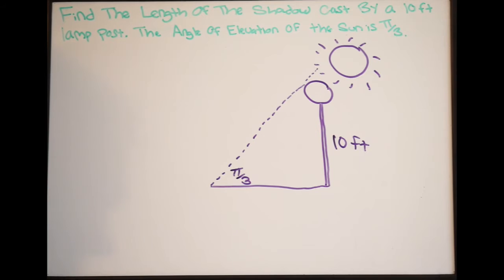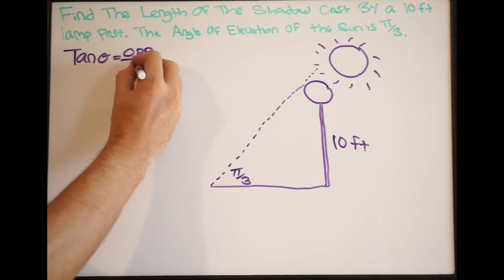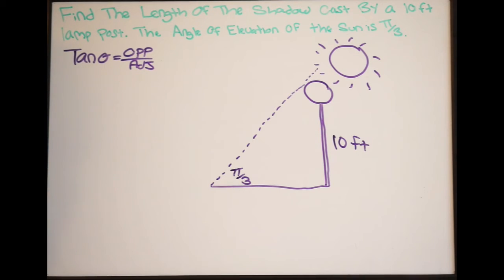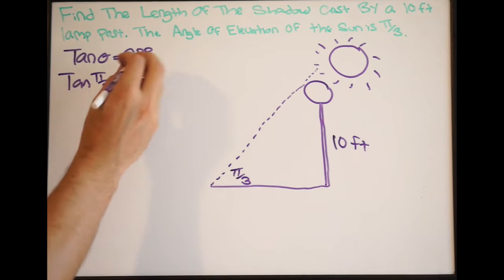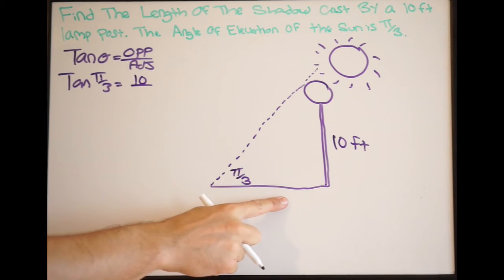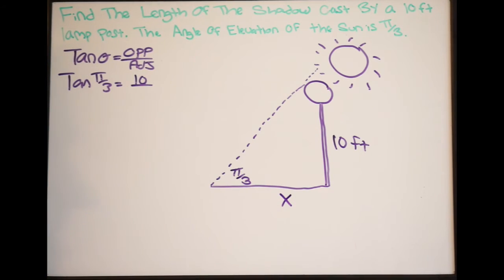Now think about tangent of an angle. Tangent of an angle is going to be opposite over adjacent. So looking at our picture here, we can fill in our values. Here we're going to have tangent pi over 3 equal to our opposite, which is 10. And adjacent, that's what we're trying to find here. This adjacent length is going to be the length of the shadow cast by the lamp. So we're just going to say x here. So we're trying to solve for x.